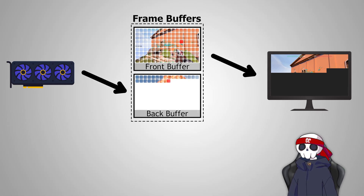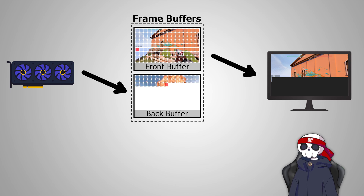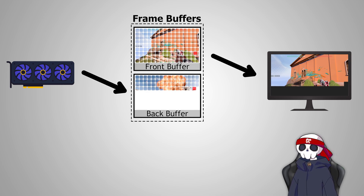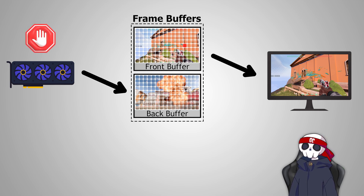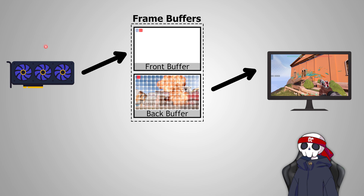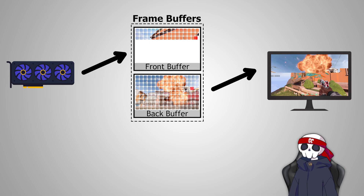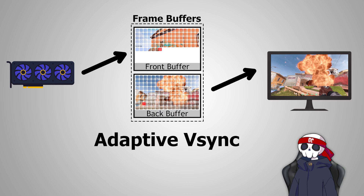Here's how stuttering happens: in an intense part of a game, like a bomb blast, your GPU becomes slow and takes more time to render a frame. Meanwhile, your monitor finishes showing the last frame. Because the new frame isn't ready, your monitor starts displaying the old frame again. As soon as it starts displaying that old frame, the GPU finishes rendering the new frame — but because of V-Sync, your GPU has to wait until your monitor finishes displaying that old frame again. This is called stuttering, because you are seeing the same frame repeatedly until your GPU renders a new frame.